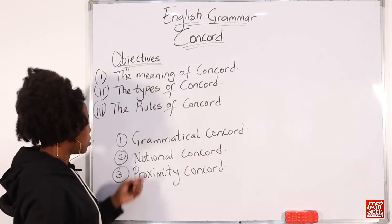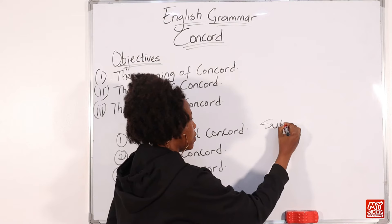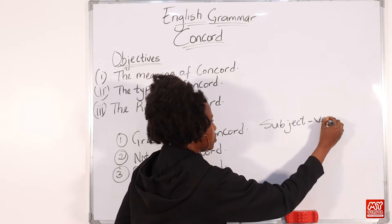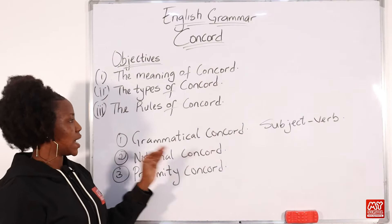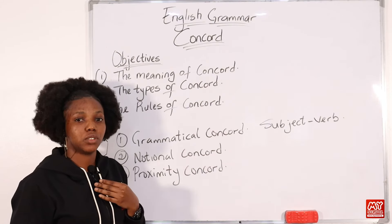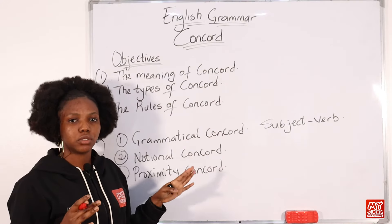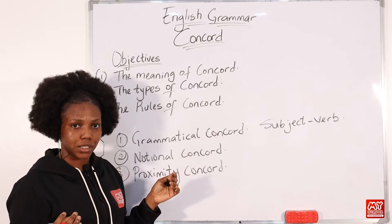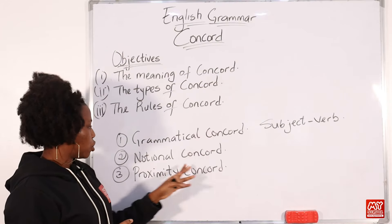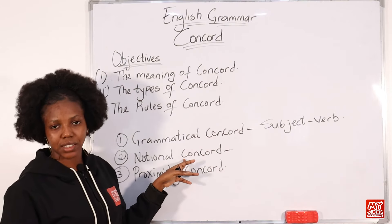Let's take a look at each of those types. Grammatical Concord is simply the subject-verb relationship. We look at how the subject agrees with the verb: if it is a singular subject, it should go with a singular verb; if it is a plural subject, it should go with a plural verb. We look at the grammatical structures of sentences and how subjects agree with the verb grammatically.